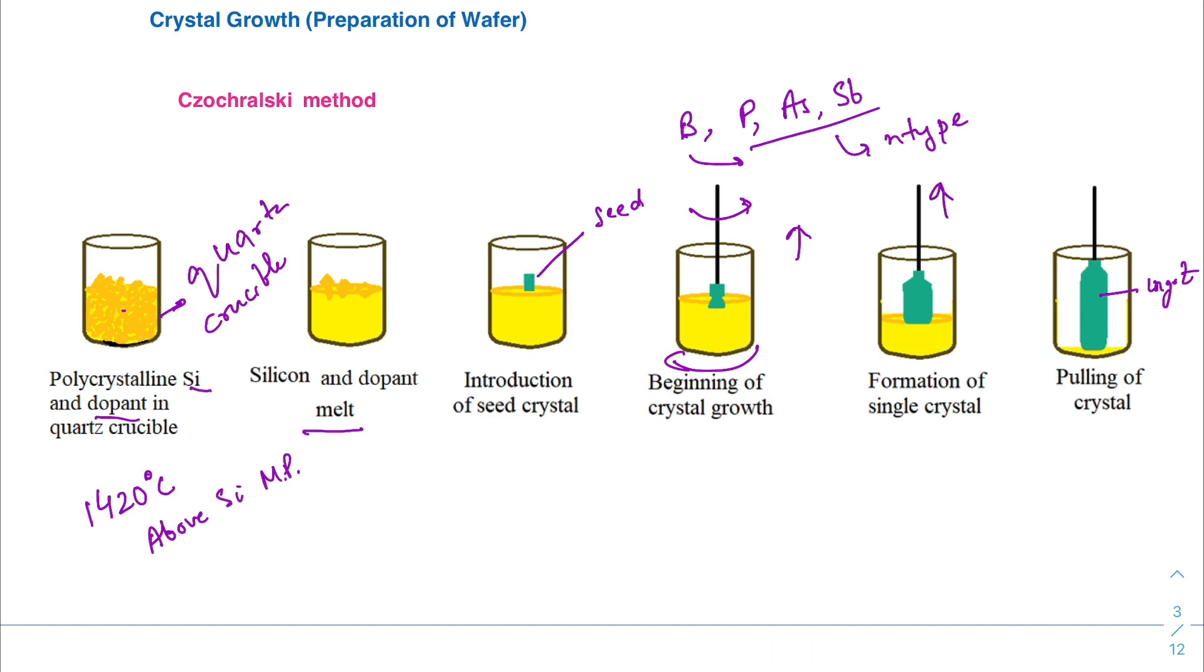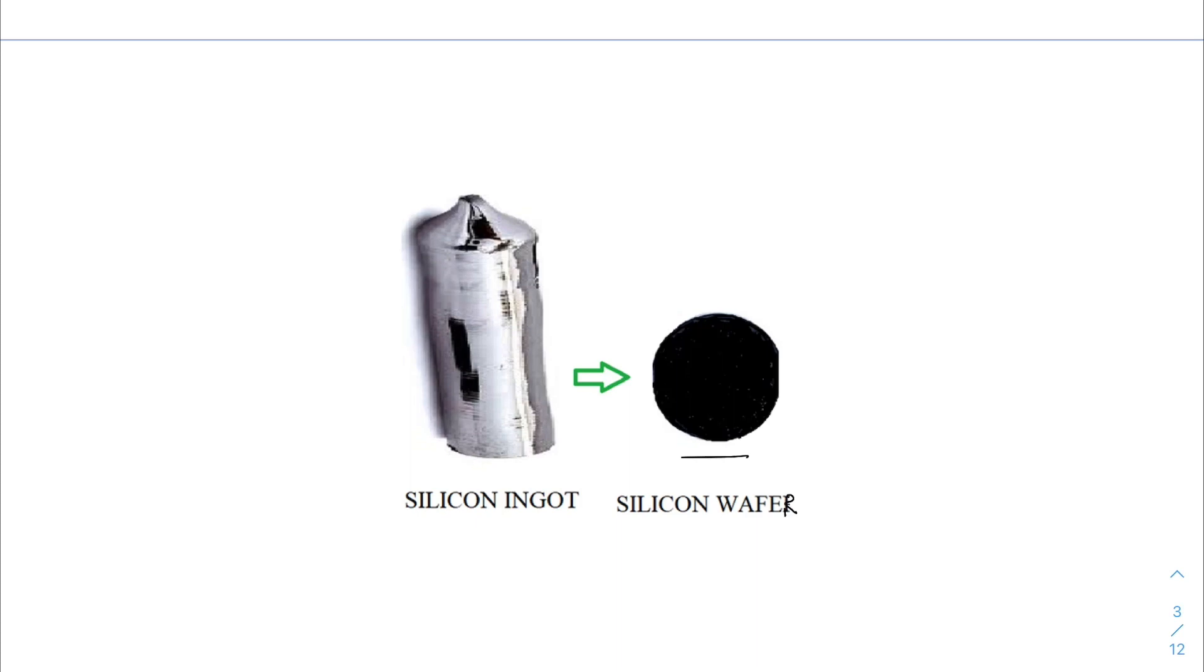The pull speed is then reduced to allow the diameter of the crystal to increase. When the desired diameter is obtained, the growth conditions are stabilized to maintain it. The seed is then slowly lifted and allowed to cool. While cooling, the atoms orient themselves to the crystal structure of the seed. The ingot is sliced into wafers, cleaned using hydrogen peroxide, then lapped and polished. This lightly doped p-type wafer provides the substrate on which active and passive elements are built.